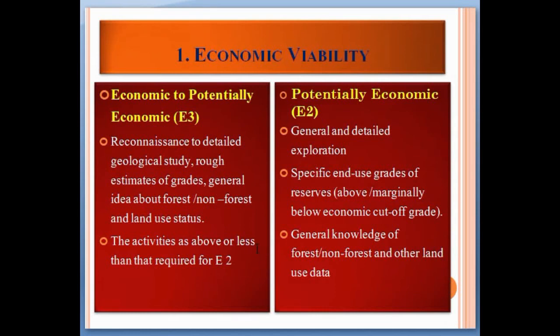Now we will learn individually about the economic axis, feasibility axis, and geologic axis. Starting with the economic viability axis — since the codes work in decreasing order, we begin with E3. The E3 category is known as 'potentially economic' and requires reconnaissance to detailed geologic study, rough estimates, general ideas about forest/non-forest and land usage status. The activities required by E3 are less than those required for E2.